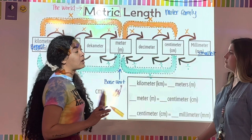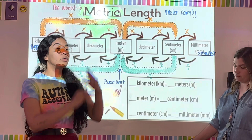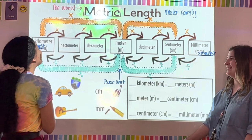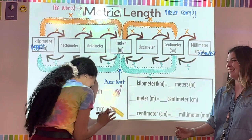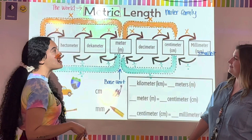Miss Parr just explained that kilometers are the biggest unit of measurement in the meter family and millimeters are the smallest. Now we're going to talk about the highway. Just like with customary measurement, our metric system has the same highway rules. Everywhere around the world, if you're on a highway, you can only go one direction.